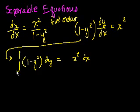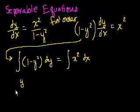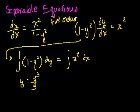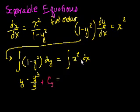Now I can just integrate both sides — whatever you do to one side of the equation, you have to do to the other. The integral of 1 minus y squared with respect to y is y minus y to the third over 3, plus a constant. On the right side, the antiderivative of x squared is x to the third over 3, plus another constant.